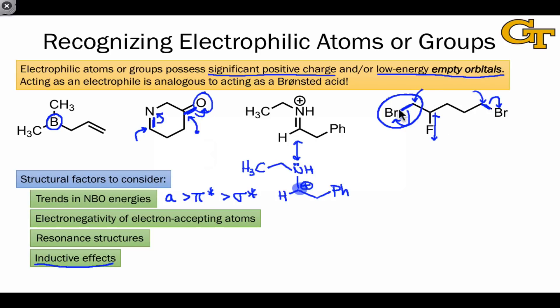The electron-pushing and pulling effects of donating and withdrawing groups inductively can influence the reactivity of electron-accepting groups like carbon-halogen bonds or polarized carbon-heteroatom pi bonds.